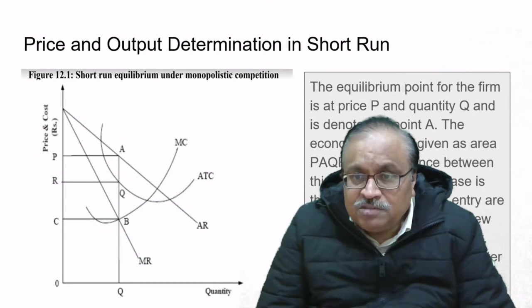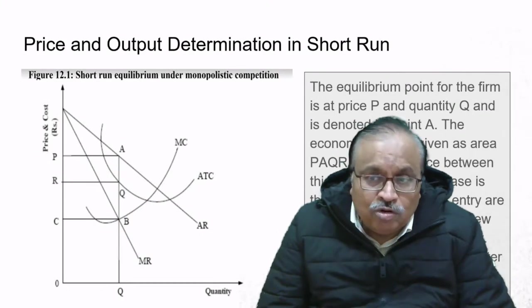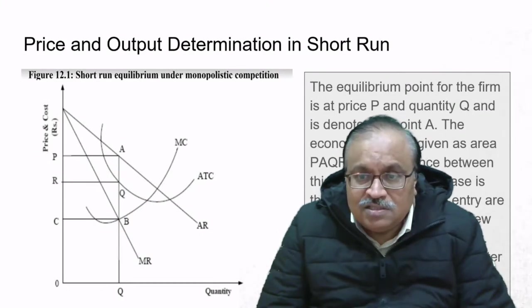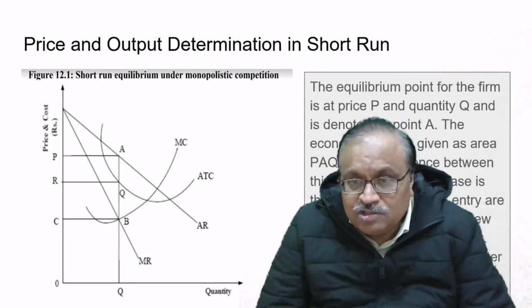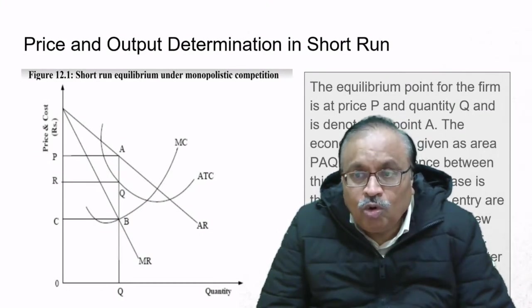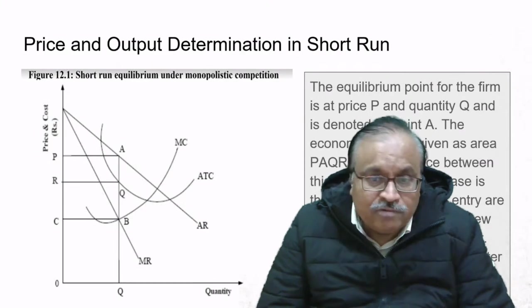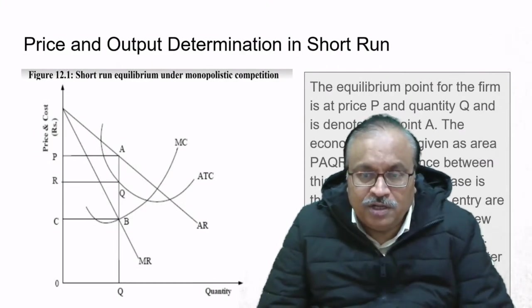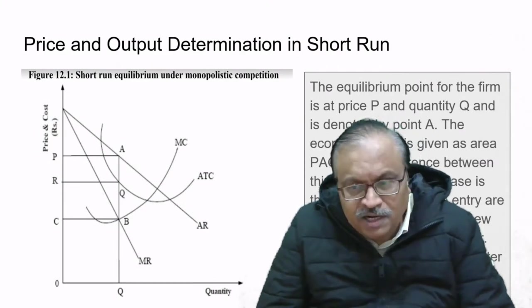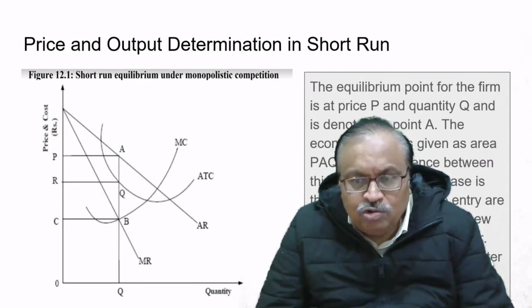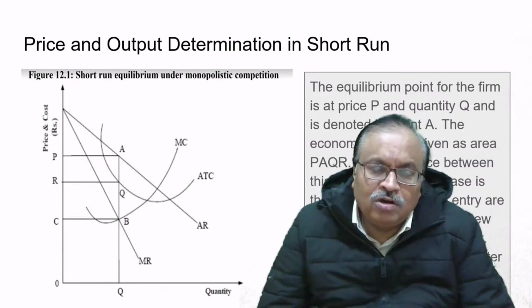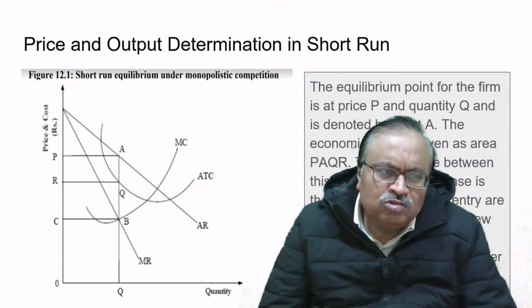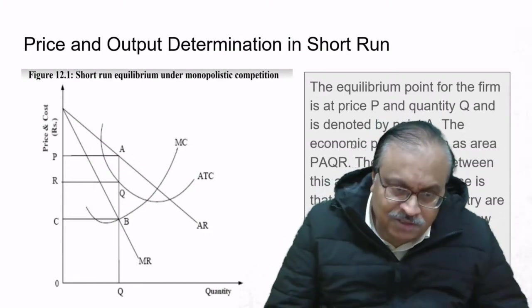The difference between this and the monopoly case is that here barriers to entry are low or weak. Therefore, new firms will be attracted, and fresh entry will continue as long as there are super-normal profits.